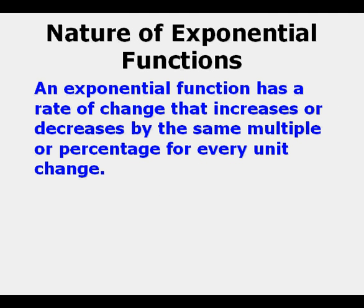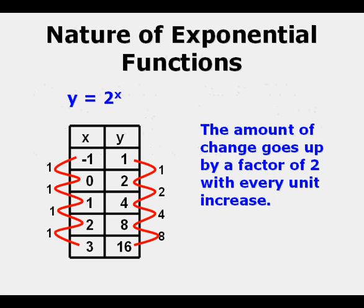Now an exponential function has a rate of change that increases or decreases by the same multiple or percentage for every unit change. Here we have the function y equals 2 to the power of x. We see on the right side, it goes up from 1 to 2 by multiplying 1 times 2, 2 to 4 by multiplying 2 times 2, and 4 to 8 by multiplying 4 times 2. So that's a factor of 2 with every unit increase.